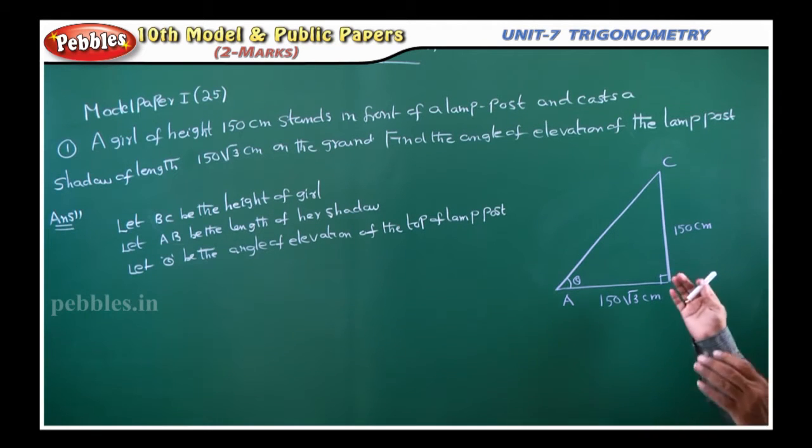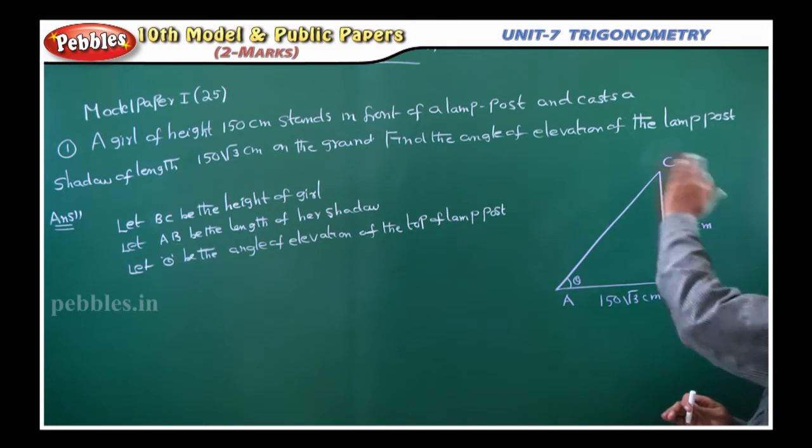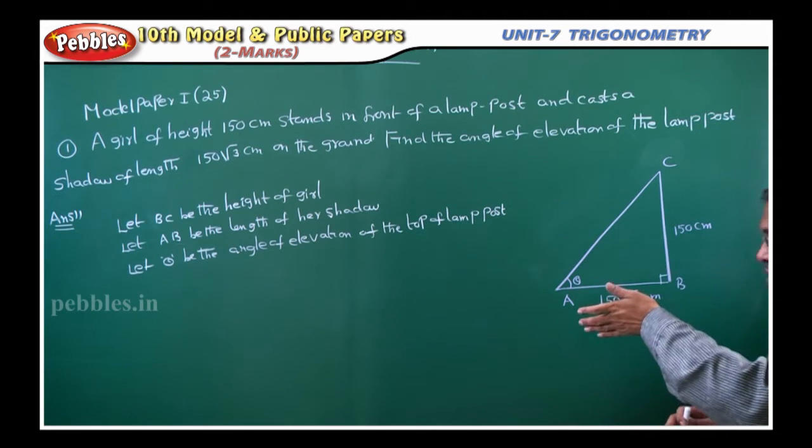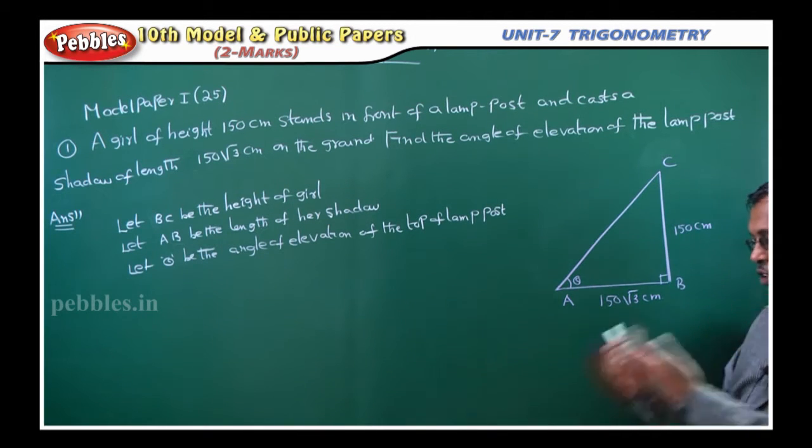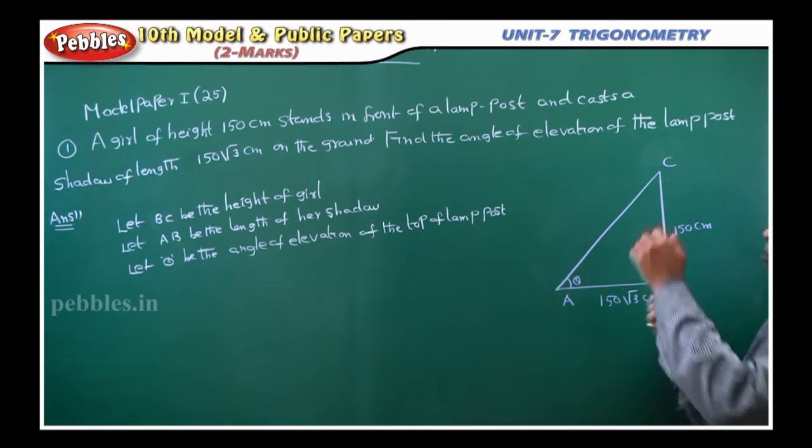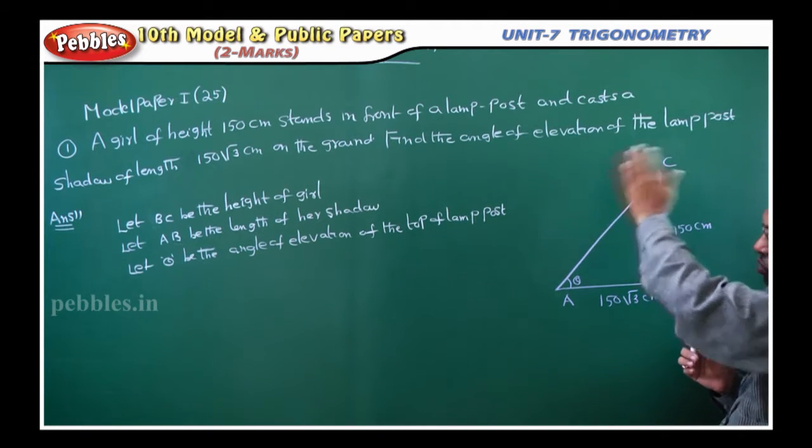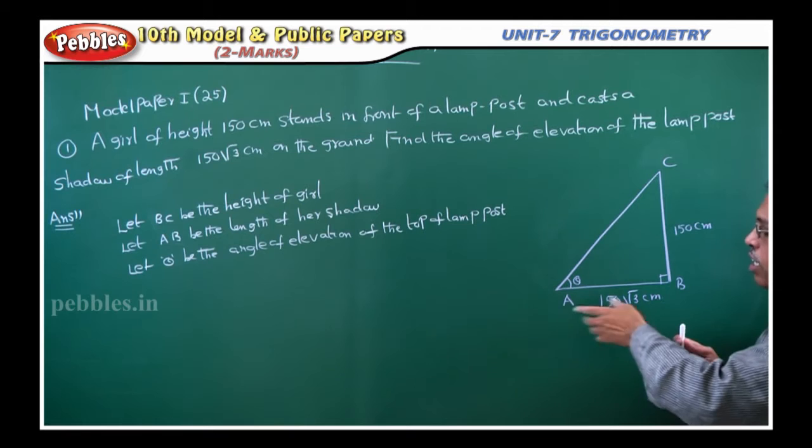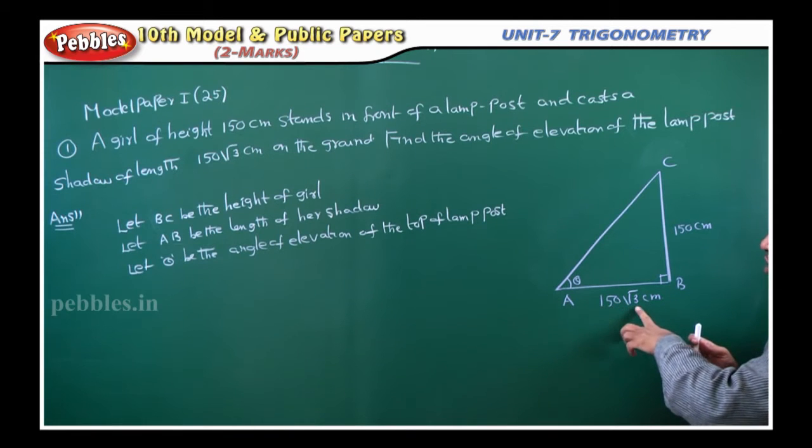Now, the shadow is casting. Casting is what? It is falling on the ground. Suppose I am standing here, my shadow will fall on the ground. Similarly, a girl's shadow is falling on the ground and the length of the shadow is given as 150 root 3 centimeters.